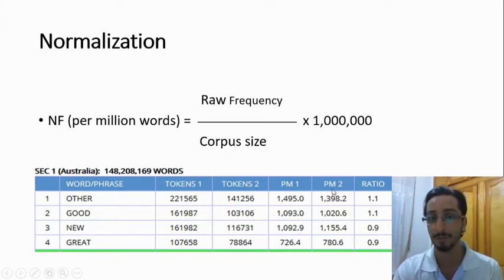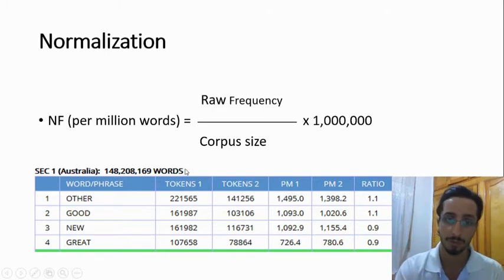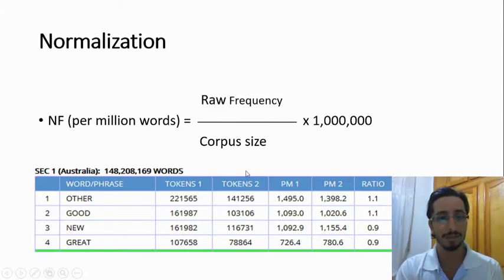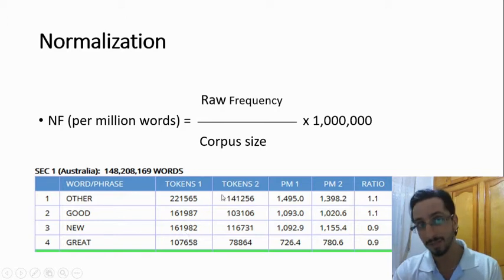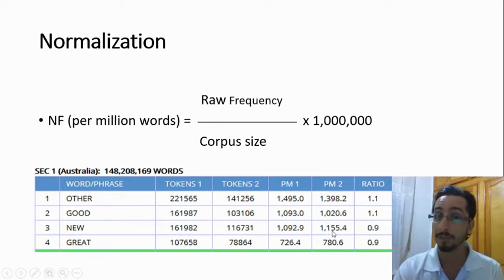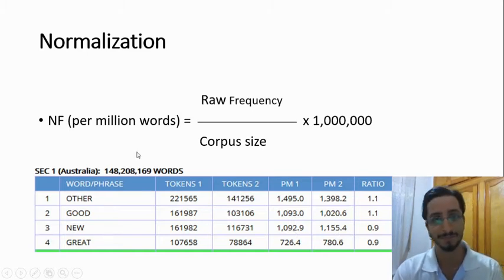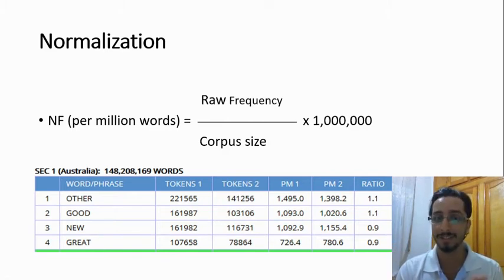Here you can notice one interesting thing. Have a look at the adjective 'new' — it is actually used more frequently in the Australian corpus in raw terms, but if you look at the normalized frequencies, it seems that it's used more in the Irish corpus. So the bottom line is: if you're working with corpora of different sizes, don't rush to compare raw frequencies. Always go for normalized frequencies.